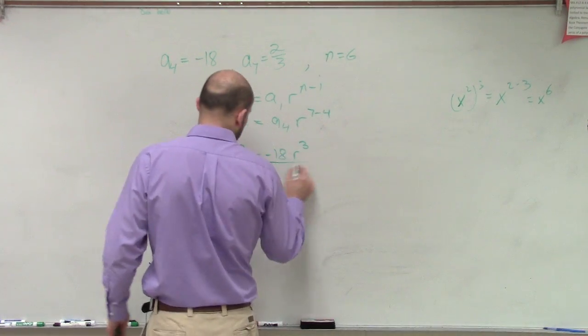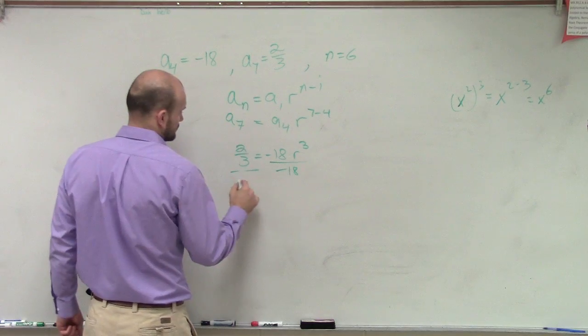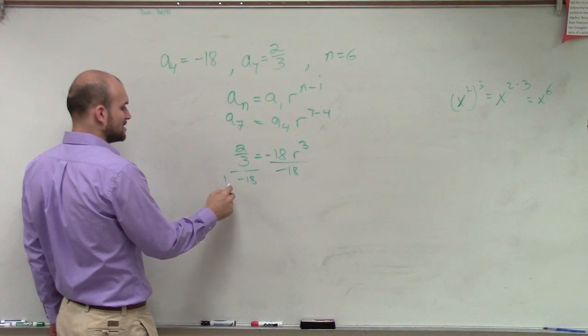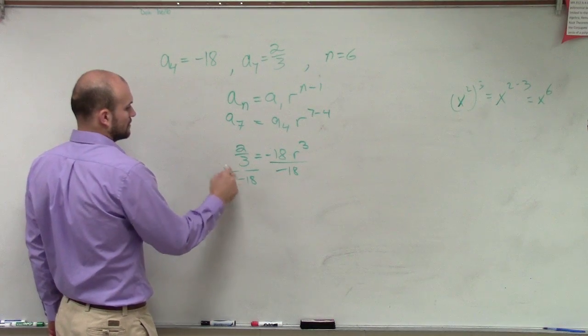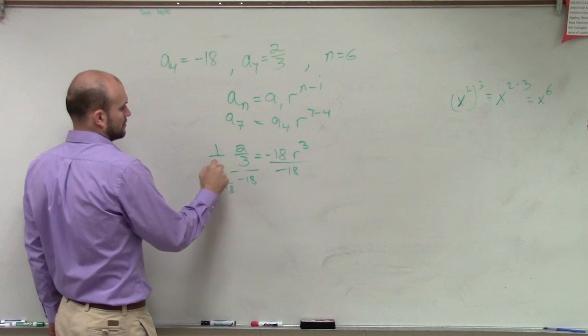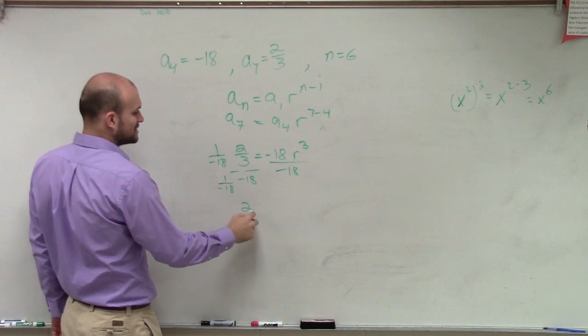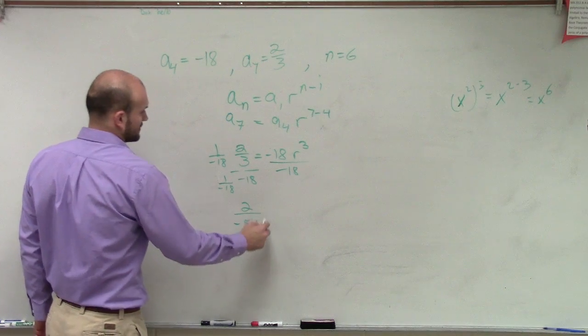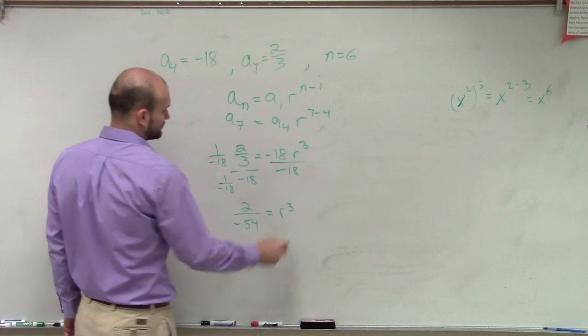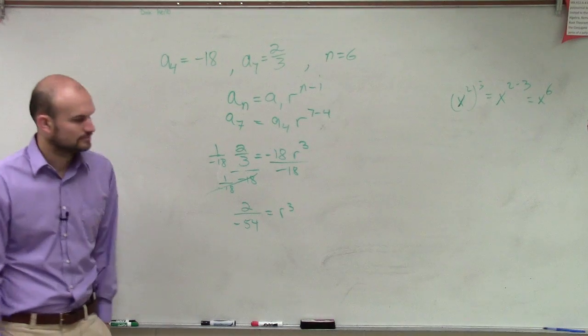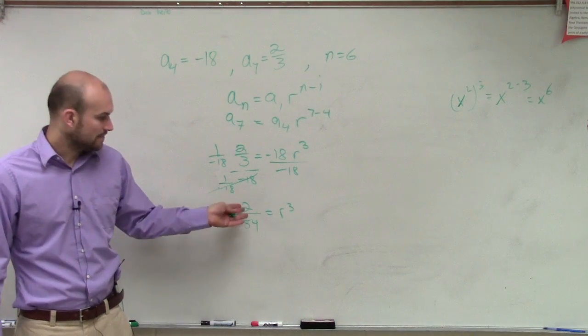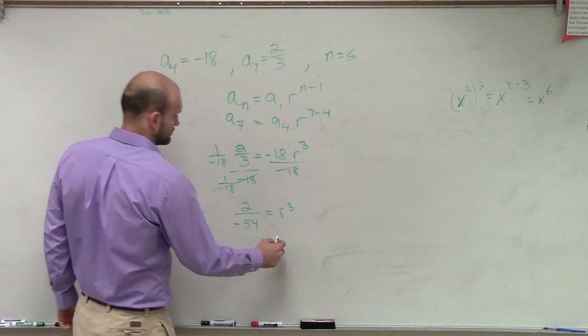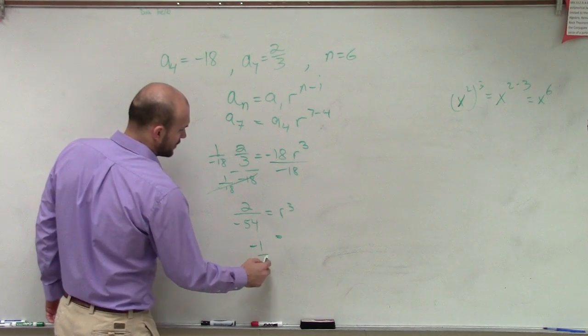So I divide by negative 18. Remember, dividing by a fraction by a number is like the same thing as multiplying by the reciprocal, which that gives me 2 over negative 54 equals r cubed. Alright, now this reduces, right, to 1 over 27, to a negative 1 over 27.